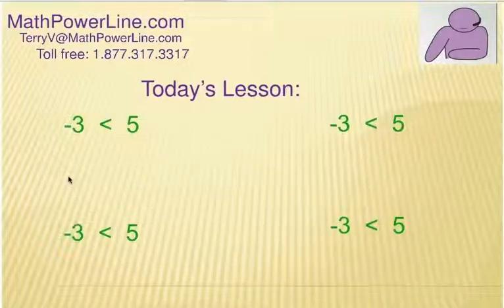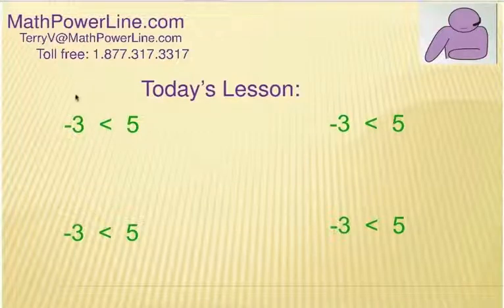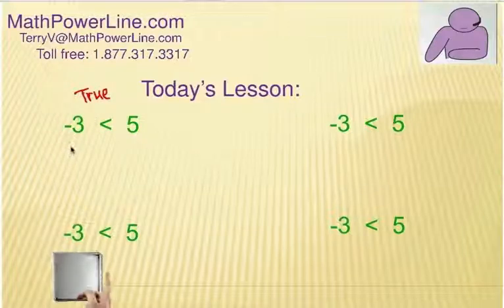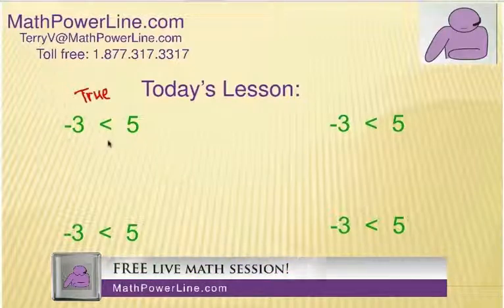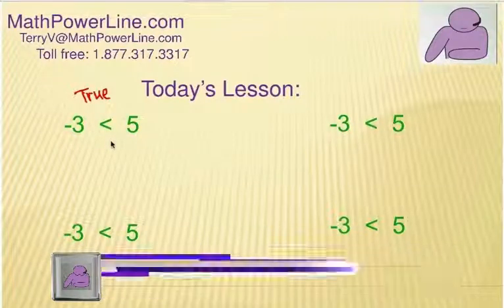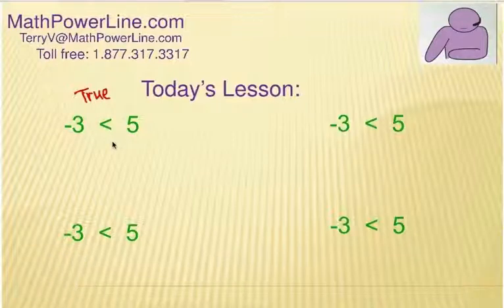All right, I'm going to start with a relationship here that's negative 3 is less than 5. All right, well, we know that's true for sure. We want to be able to do some things to each side of this relationship and keep that a true statement. So inequalities are actually types of equalities. In other words, we can use the properties of equations in inequalities to solve them.